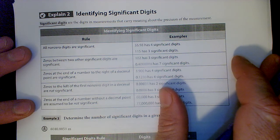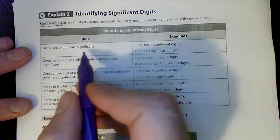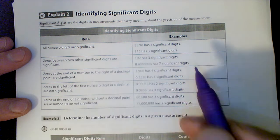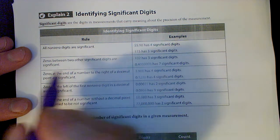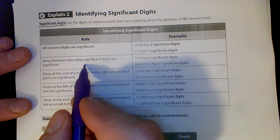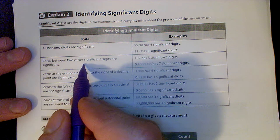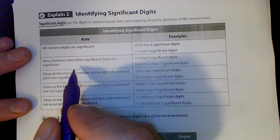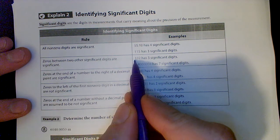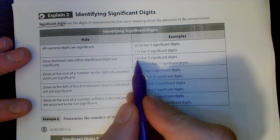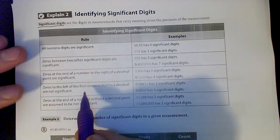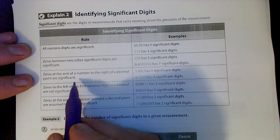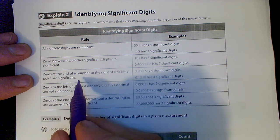All non-zeros are significant - any number that's not a zero is significant. Zeros between two significant digits are also significant. So if you have something like 1, zero, 2 - the one and two are significant, and that zero in between is also significant, giving you three significant digits.